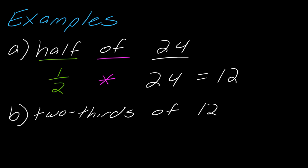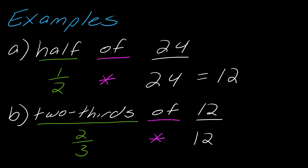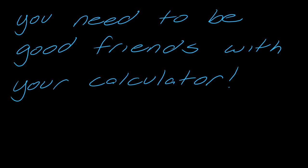Now let's try two-thirds of 12. The direct translation: two-thirds is the fraction, 'of' means multiply, and then the 12. Pause the video and actually calculate this — you should get 8. You have two different ways to try calculating this. Take your time and actually do that; you definitely need to be good friends with your calculator.